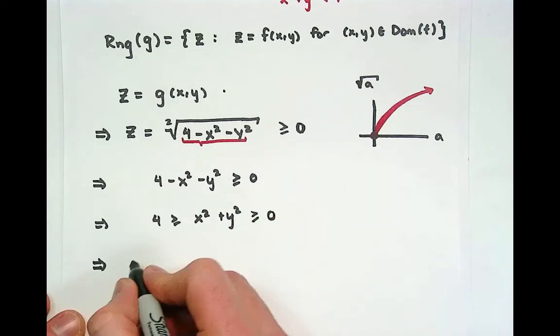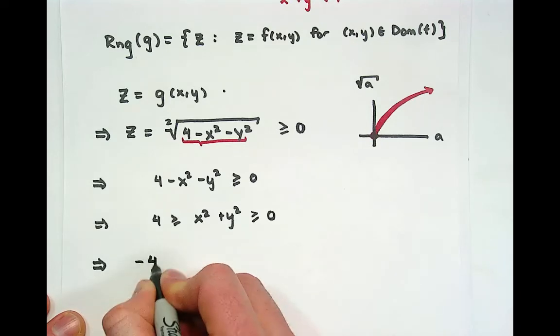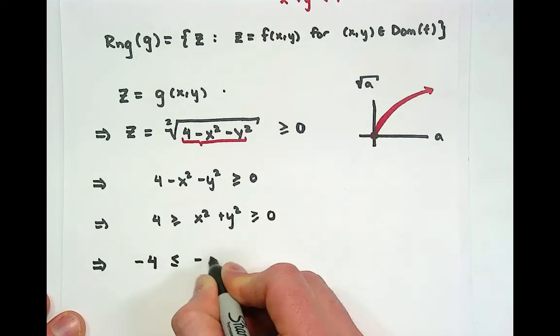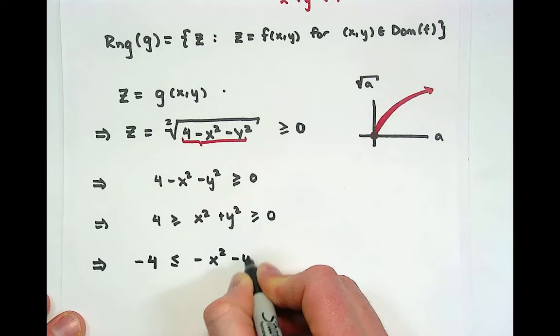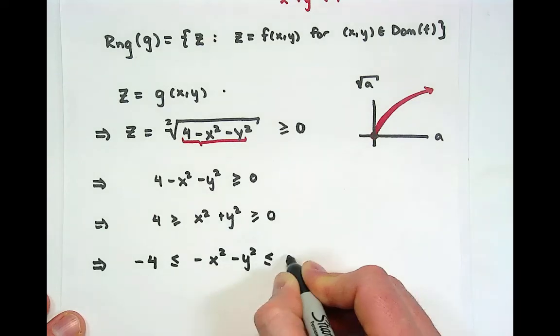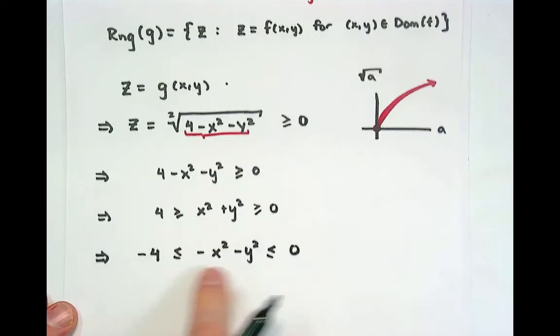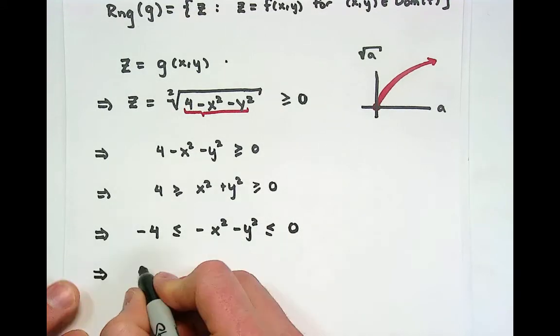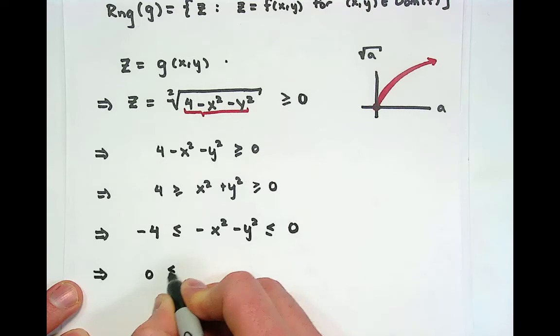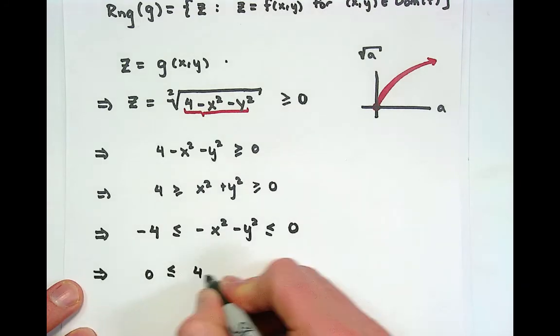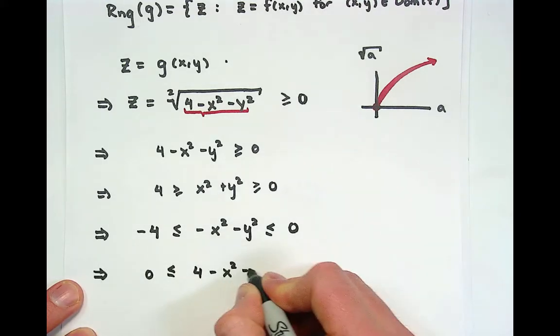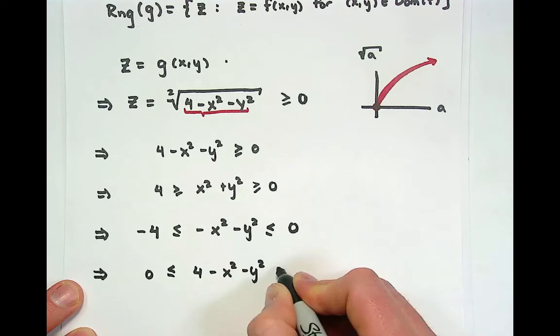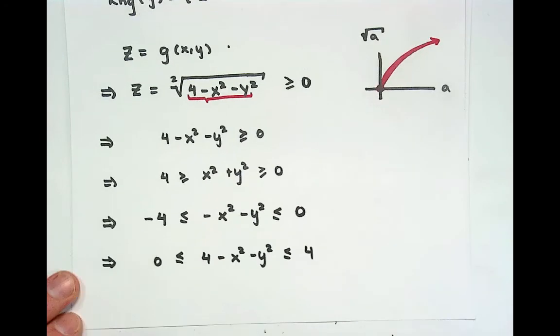We can do something kind of fun here, which is we can multiply the entire inequality by a negative. When we multiply inequalities by negatives, the direction of the inequality flips. Then if we add 4 to every single one of these expressions on either side of the inequality, we get something that looks like this.